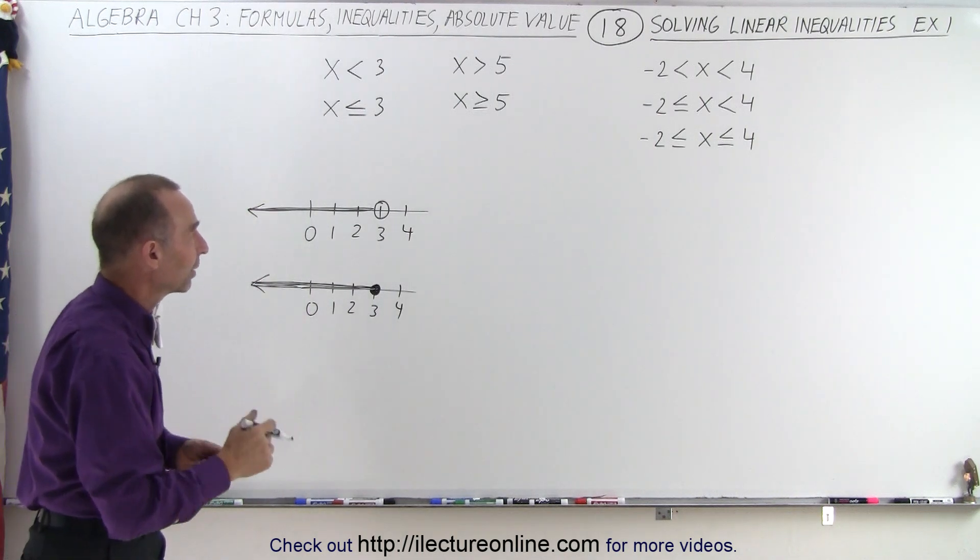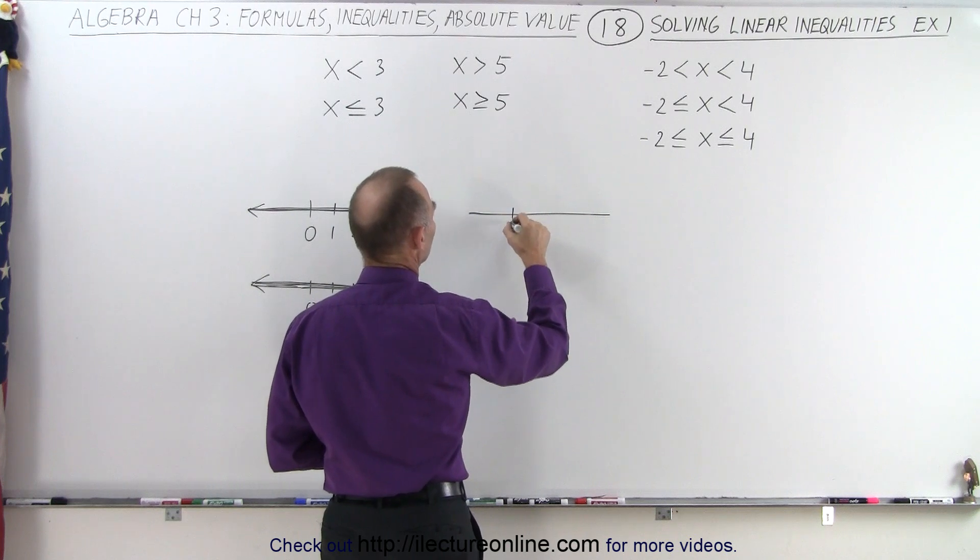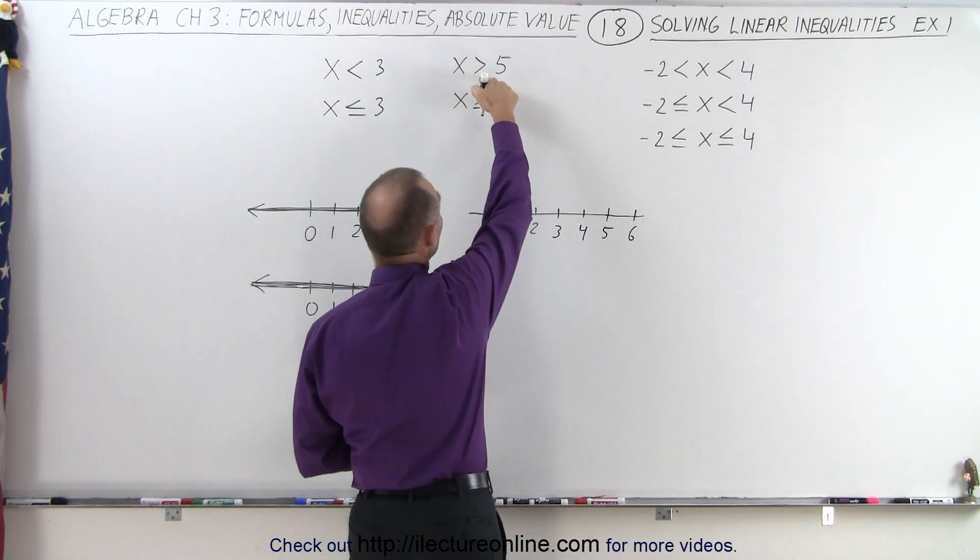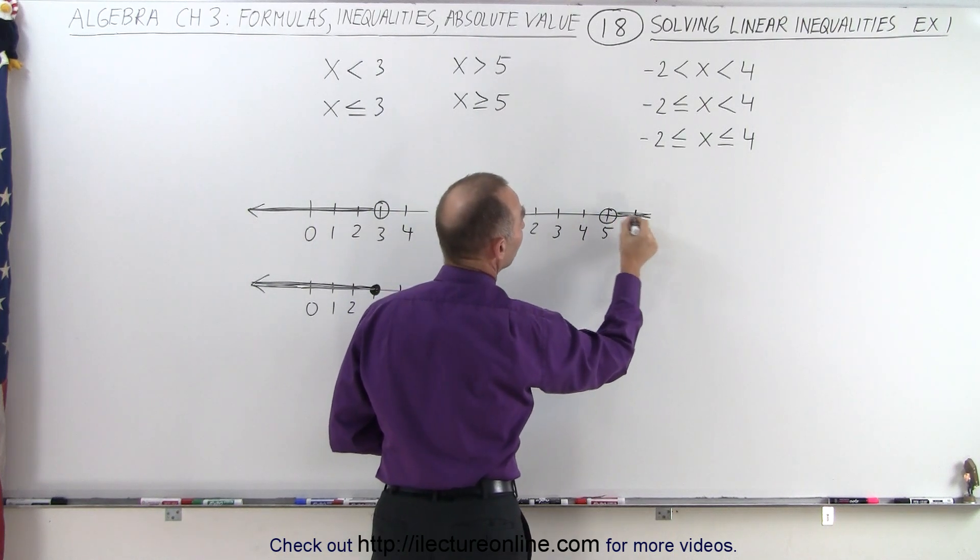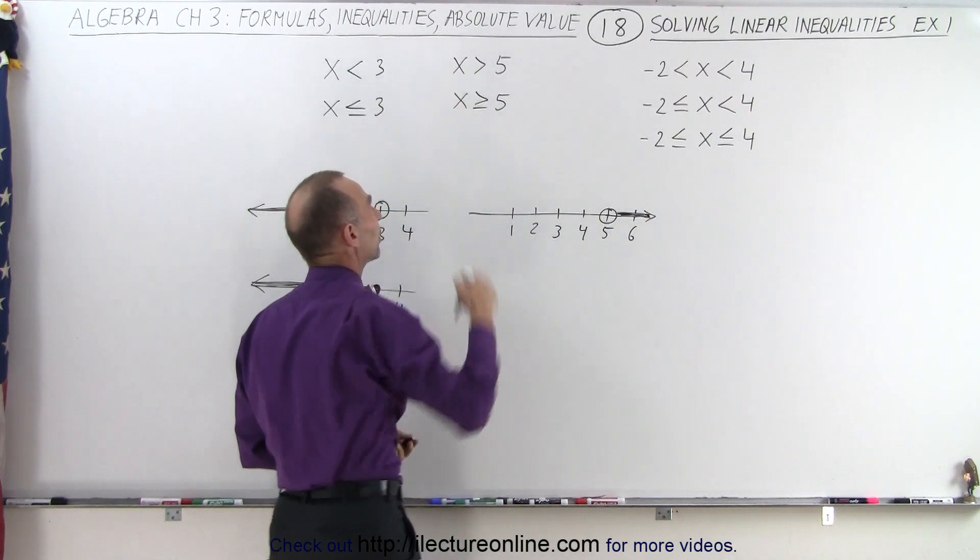We do the same for x is greater than 5. We draw a number line, draw some points, and since we're not including the endpoint 5, we draw a hollow circle, then point to the right because it's everything bigger than 5, and that would be the solution.